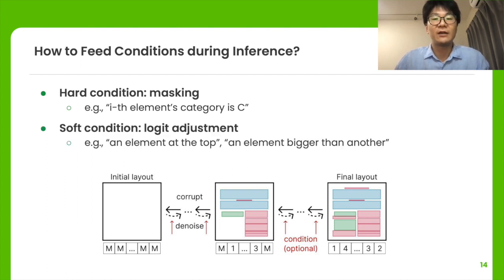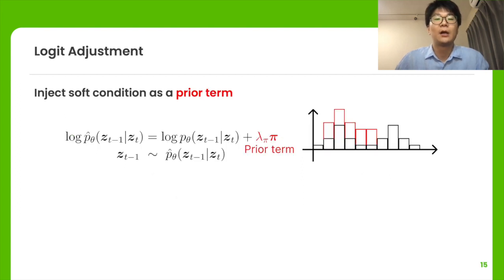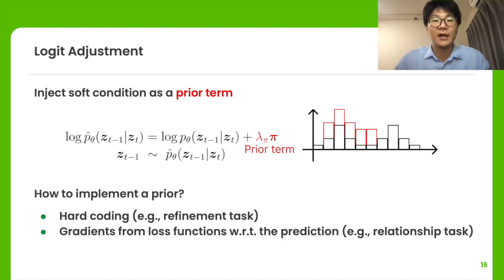If the condition doesn't directly specify a value but tries to provide some hints, we call it the soft condition and solve by logit adjustment. A logit adjustment is to add a prior term to the predicted logits so that the provided conditions are more likely to be met when z_{t-1} is sampled from the logits. The actual implementation of the prior term is very flexible. The most simple one is hard coding. It can also be gradients from loss functions with respect to the prediction.